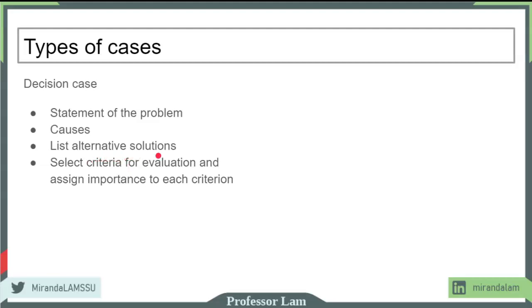Each alternative you come up with will fare differently under each criteria. For example, seeking outside funding will enable growth, so you have a high score under the growth criteria, but you may have a low score under control because now you have to share the business with another person. That's the solution and the criteria. You want to analyze the strengths and weaknesses of each alternative under each criteria.